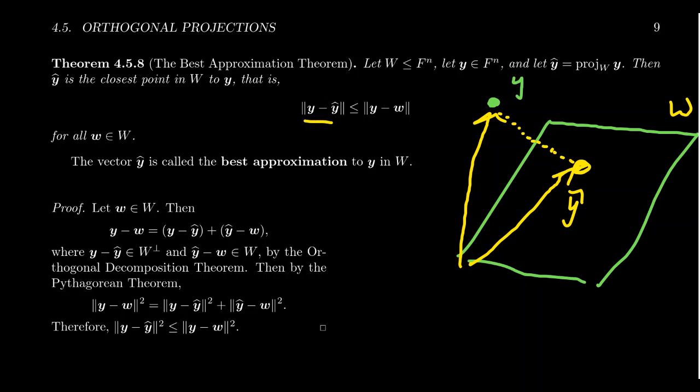The distance between y and y-hat is less than or equal to the distance between y and w for any vector w inside of W. And so this is why we call y-hat the best approximation of y in W. It's the closest vector in W to y.